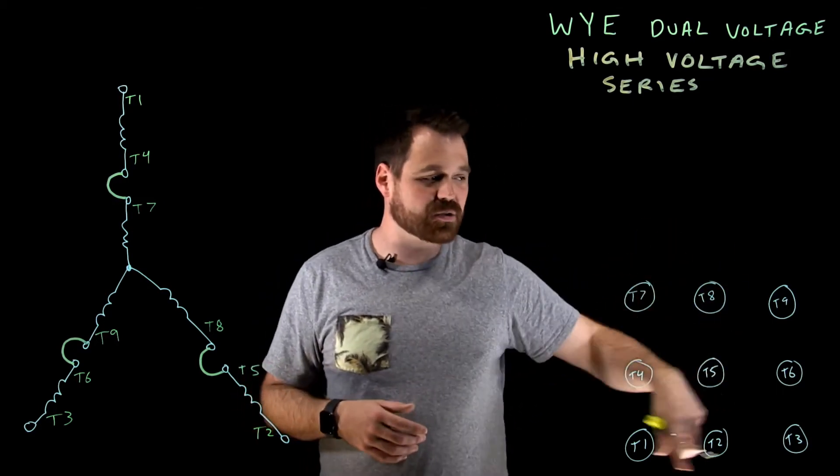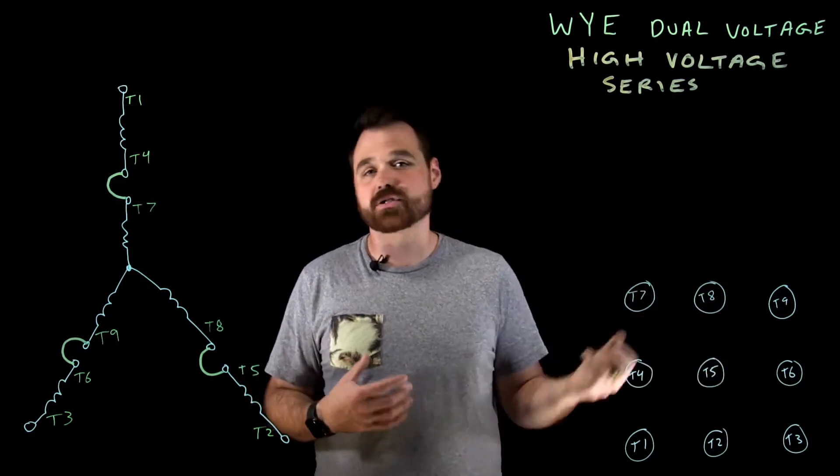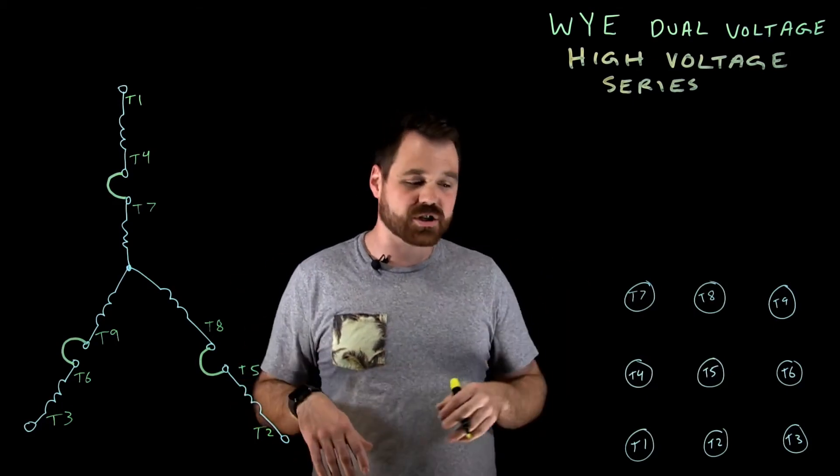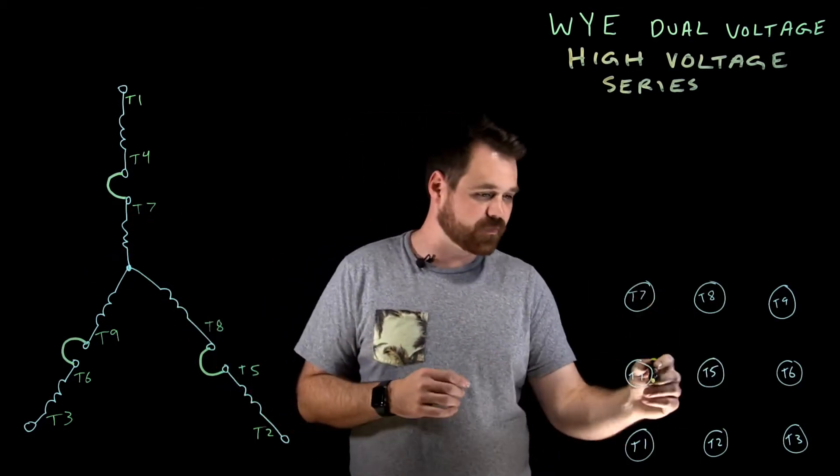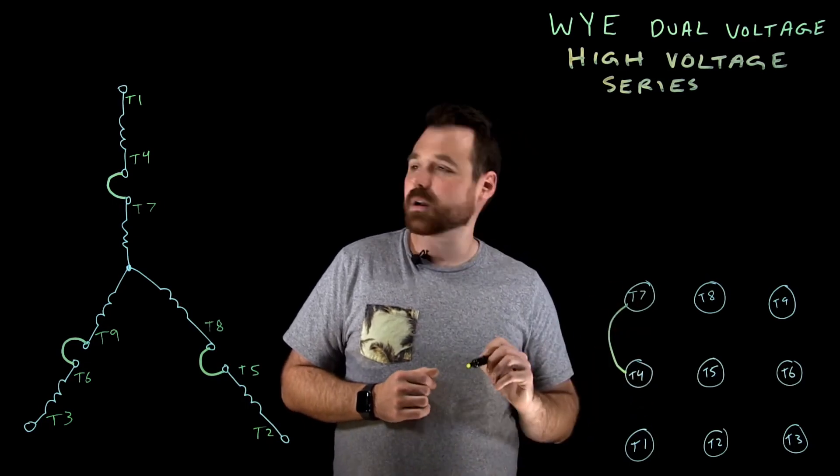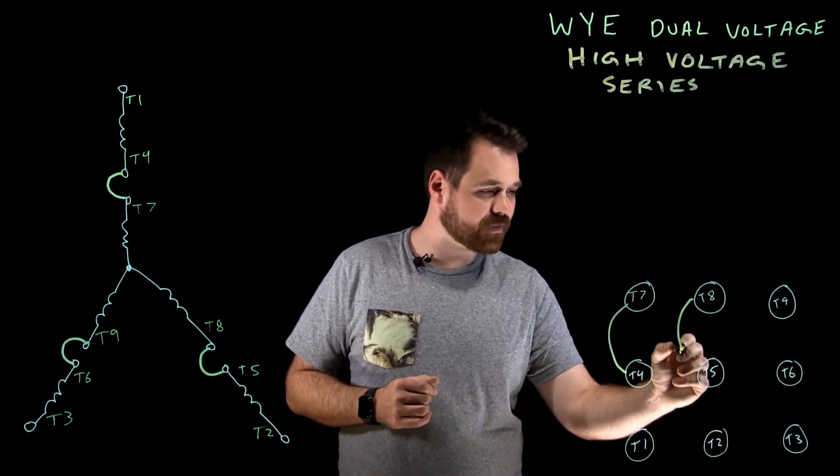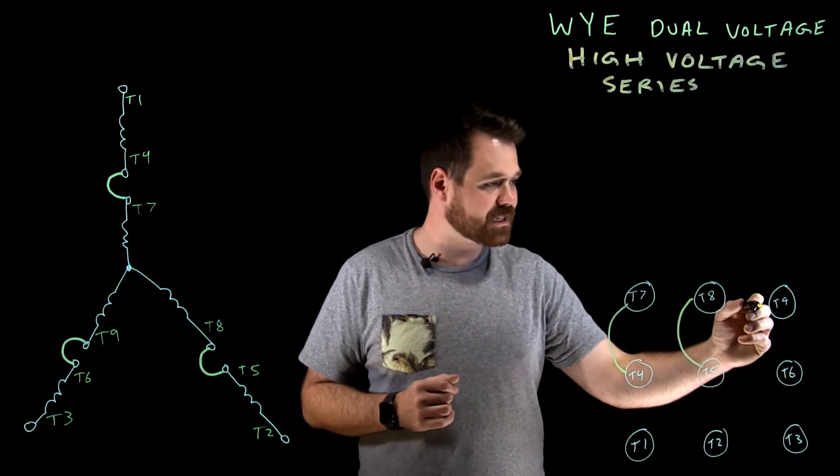And then what I have over here, these would just represent my nine conductors coming out of my junction box. And I would just make those connections over here so I can help visualize it. So T4 to T7, T8 to T5, T6 to T9.